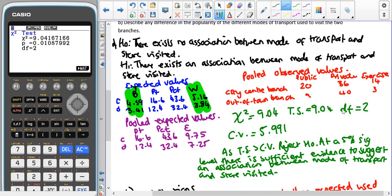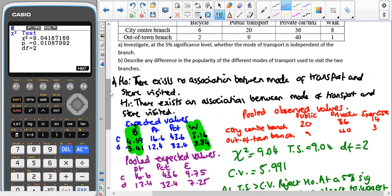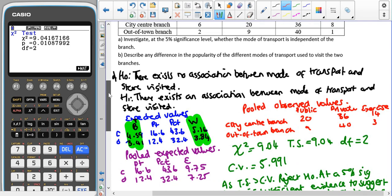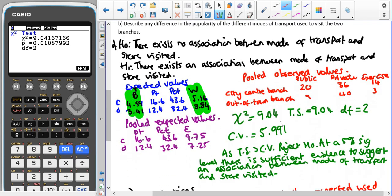And then I used the degrees of freedom being 2 and the fact that we're doing the hypothesis test at a 5% significance level so down from 0.95 across from 2 gives us 5.991 as our critical value so as the test statistic is bigger than the critical value we reject H0 at a 5% significance level there is sufficient evidence to suggest an association between the mode of transport and store visited.